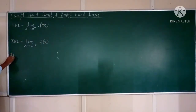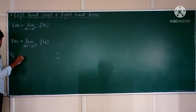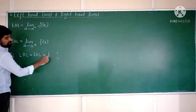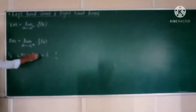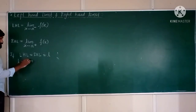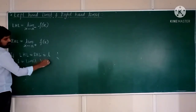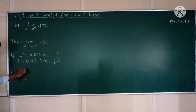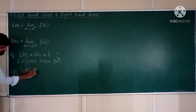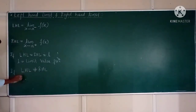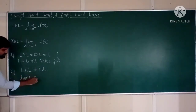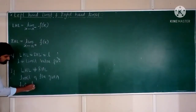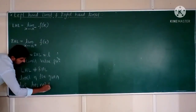Now, if for any function F(x), LHL is equal to RHL — equal to some quantity L — then this L is called the limit value of the function. If LHL of the function F(x) is not equal to RHL, then the limit of the given function does not exist.